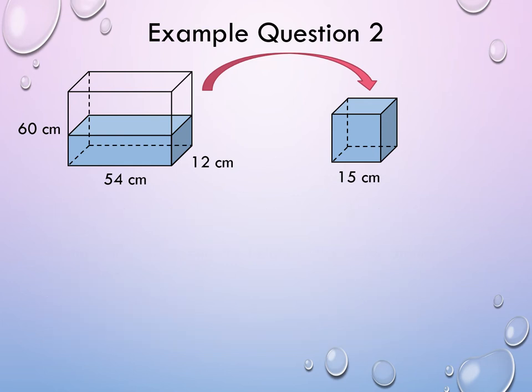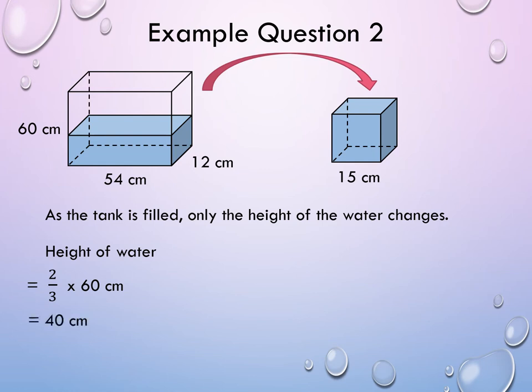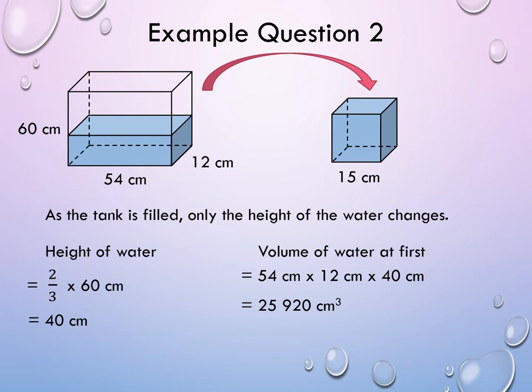Notice that as the tank is filled, only the height of the water changes. So, we can first find the height of water that is in the tank. That is two-thirds of the height of the tank, which is two-thirds times 60 centimeters, and we get 40 centimeters. And so, the volume of water in the tank at first is 54 centimeters times 12 centimeters times 40 centimeters, which is equal to 25,920 cubic centimeters.